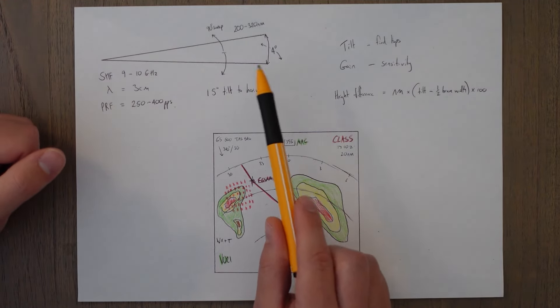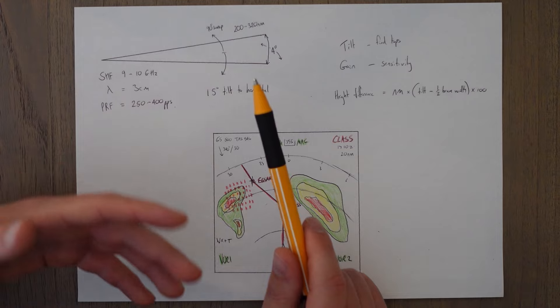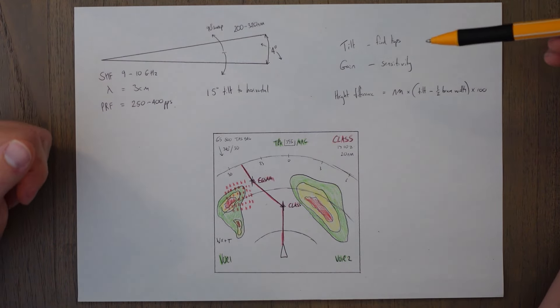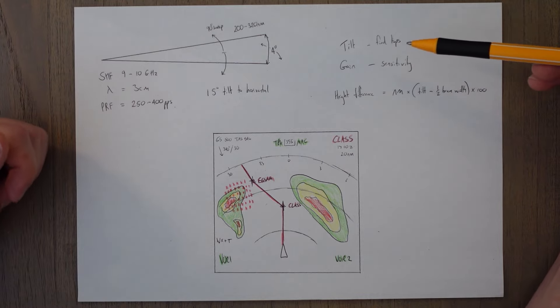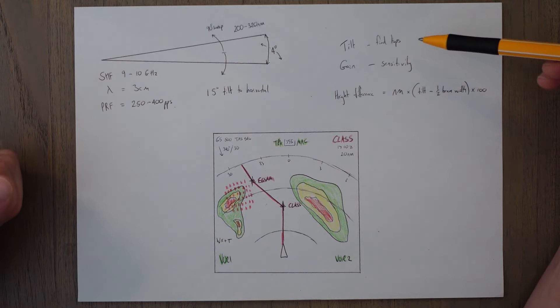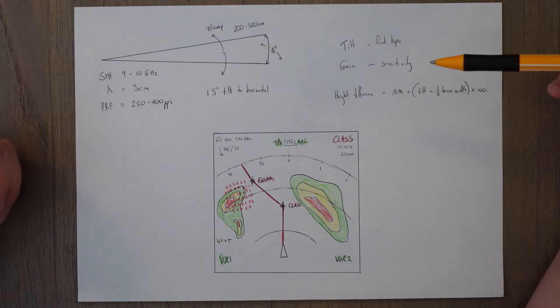Obviously these numbers are kind of general weather radar specific. Manufacturers might have slightly different numbers for these things. We can use the tilt and gain controls to adjust the angle of the beam with respect to the horizontal or the horizon and the gain adjusts the sensitivity.